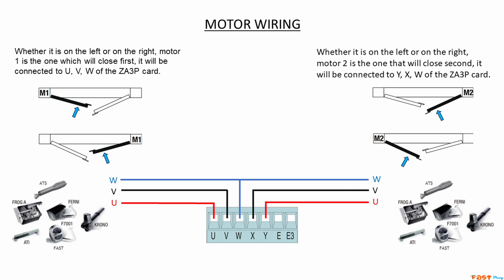Once the motors are connected, you'll need to check if the phases are wired correctly. To do that, when the setup is done and the motors are running, place the gates halfway open, cut the power, and then turn it back on.